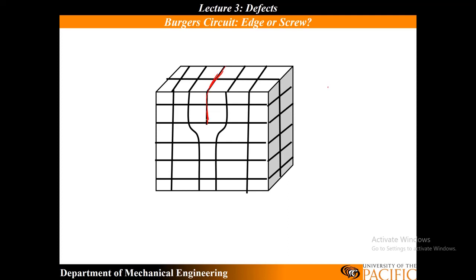So what's the first thing I have to do in my Burgers circuit? Well, I need to define my T vector. I'm going to define my T going out of the board — so it's coming right out of the page, right at you. This is my T vector. Once I have my T vector, I am going to be looking and trying to figure out I need to draw a right-hand circuit, using my right-hand rule, with my thumb pointed in this T direction.